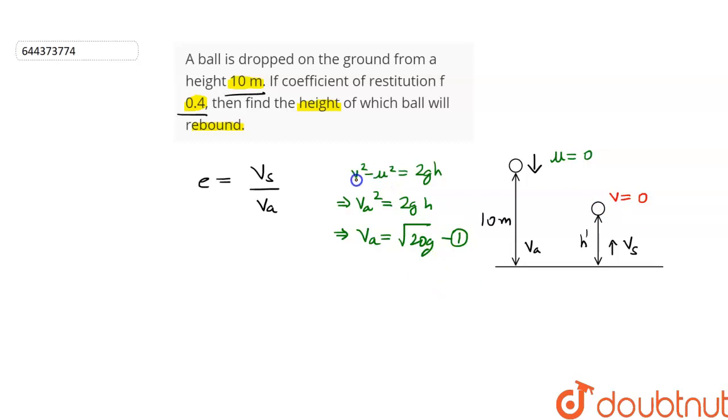but in this case, the final velocity is 0, but initial velocity is VS. So, this can be written as 0 minus VS square is equal to 2. In this case, the acceleration due to gravity will be negative because the direction of velocity is in upward direction and gravity acts in the downward direction. So, it will be minus G into the height is H dash.